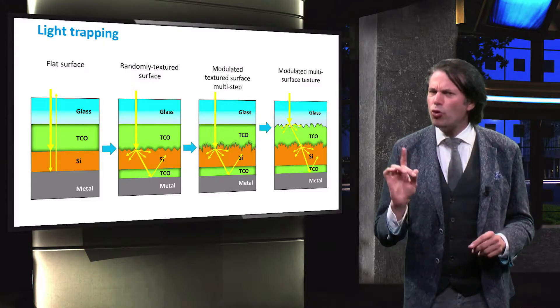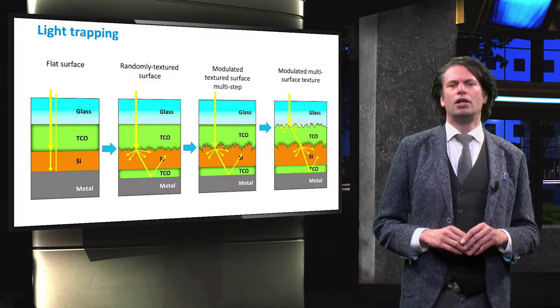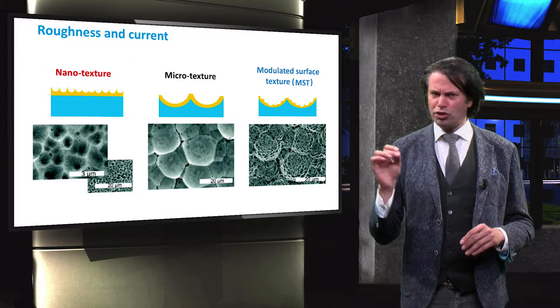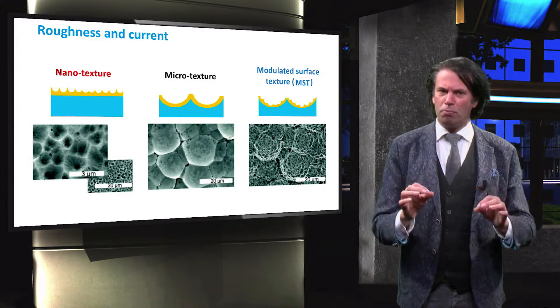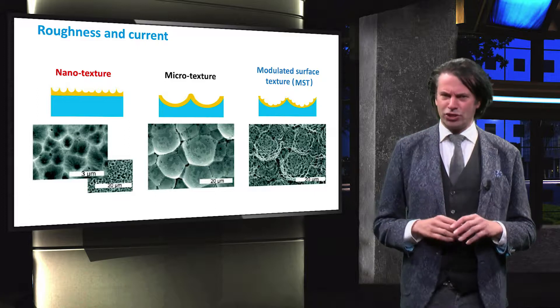We will now look into the effect of surface texture on the solar cell parameters. To demonstrate the impact on the external parameters of a solar cell, we will compare the performance of three nanocrystalline silicon solar cells with different textured TCO layers.